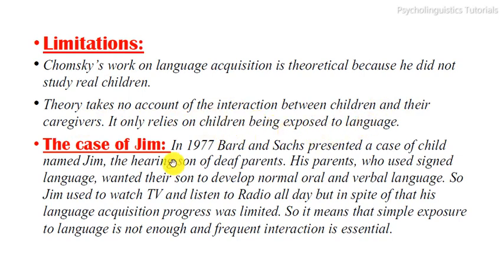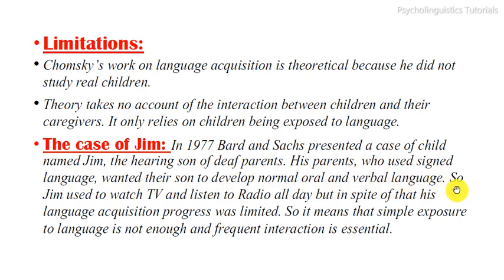The case of Jim: in 1977, Bald and Sacks presented a case of a child named Jim, the hearing son of deaf parents. His parents used sign language and wanted their son to develop normal oral and verbal language, so Jim used to watch TV and listen to the radio all day. But despite that, his language acquisition progress was limited. This means that simple exposure to language is not enough — frequent interaction is essential.